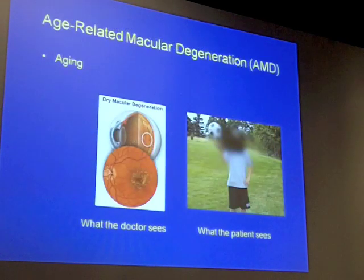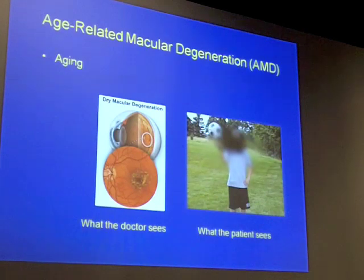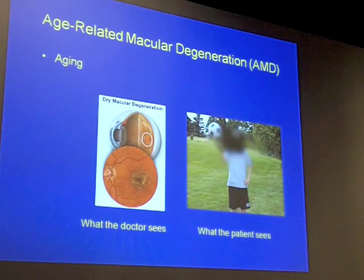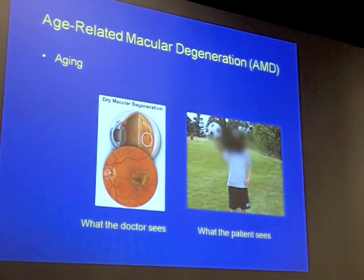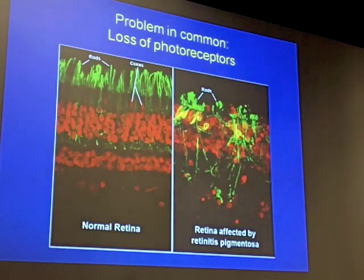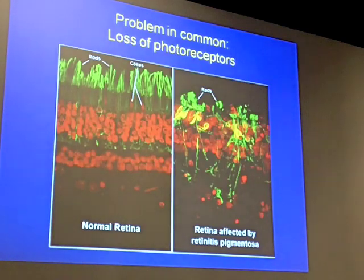The other type, much more prevalent, is called age-related macular degeneration. The symptoms of this condition are actually the opposite — you don't have trouble with night vision, and you don't have tunnel vision, but you have a problem right in the center of the vision, although the periphery is intact. Although these symptoms seem very different, the diseases are related because they have in common this loss of photoreceptors.